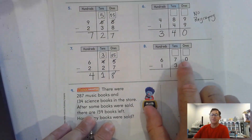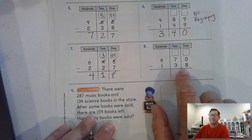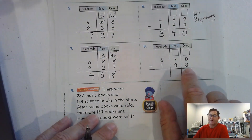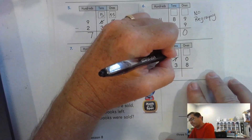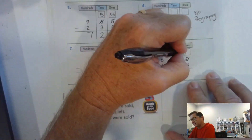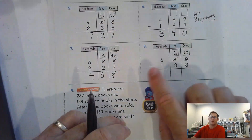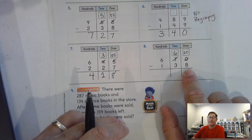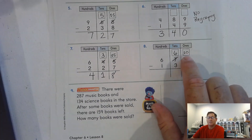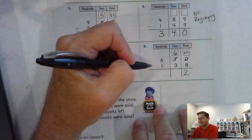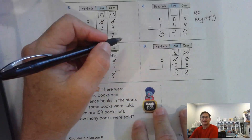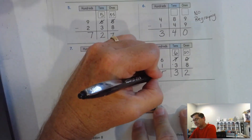Number 8: 670 take away 138. I have 0 ones, and I have to take away 8 ones — we're not going to do that. 8 is a lot more than 0, so we're going to have to regroup 1 of the 7 tens as 10 ones. Now we have 10 ones, and we have to take away 8 ones — we can do that. After regrouping, we have 6 tens and 10 ones. 10 minus 8 leaves us 2 ones. 6 tens take away 3 tens — 3 tens. 600 take away 100 is 500.